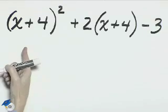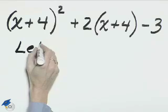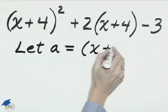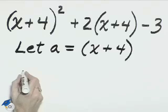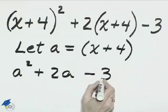Let's substitute the value of a for x plus 4. Let a equal the quantity x plus 4. So we'll have a squared plus 2a minus 3.